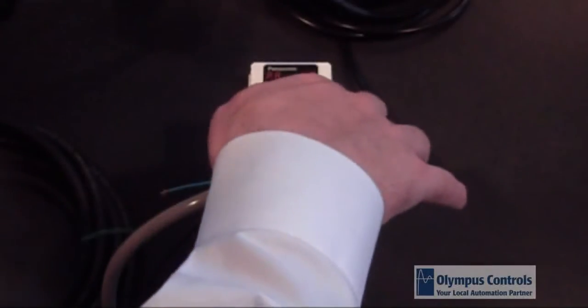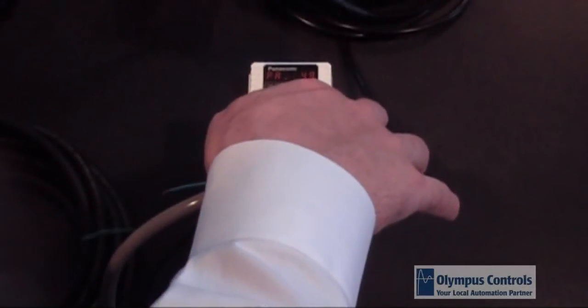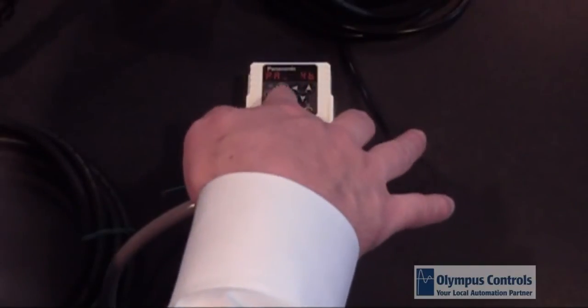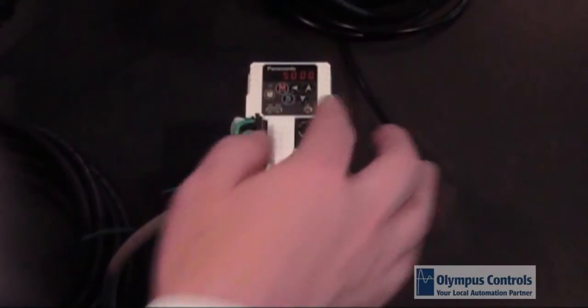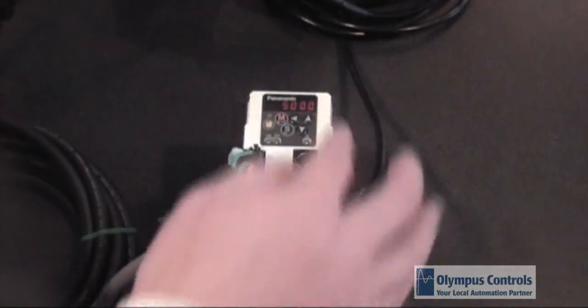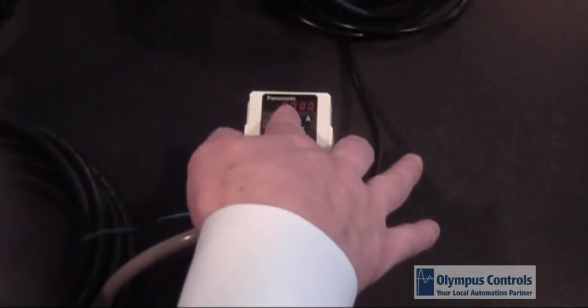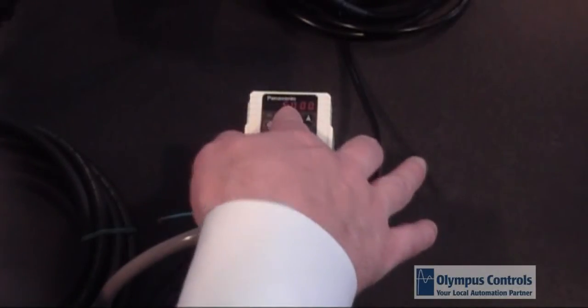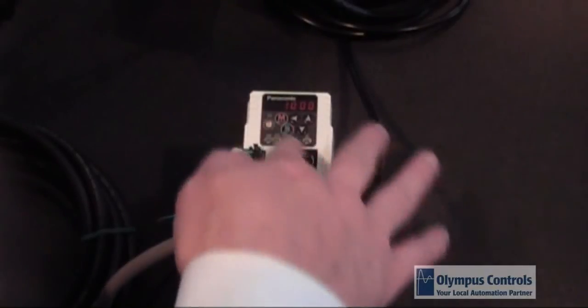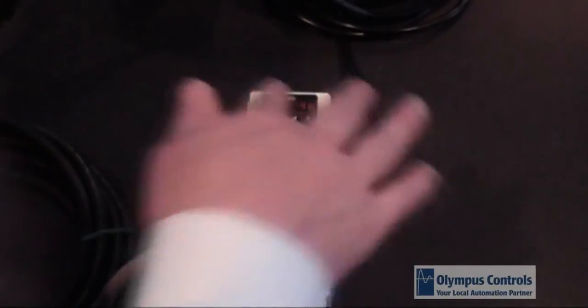And now we need to find parameter 4B and set 4B to 1,000. So we'll go up in our parameter set. Now we're at 4B. We hit Set. It is currently set to 5,000 for the side belt axis and we need to set it to 1,000. So we're going to scroll our arrow for a decimal point over three times. Hit the down arrow until we come to 1,000. Now we're going to hit the Set button.